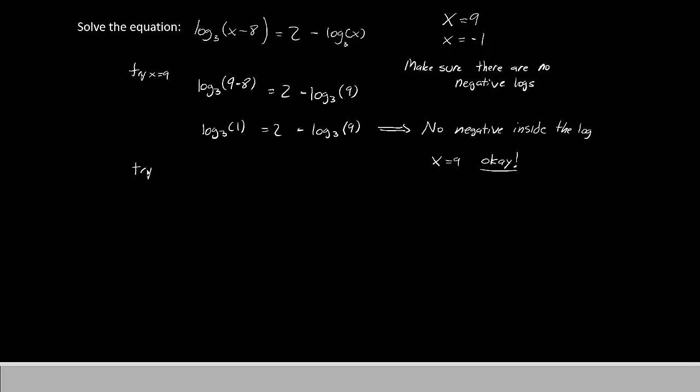Now let's try x equals negative 1. Let's put that into the top equation. We'll have log base 3 of negative 1 minus 8 equals 2 minus log of negative 1. We can already see that there is a negative number inside of the log. And if you take the log of a negative number, you will not get a real answer. Anytime you get a not real answer, the negative 1 is not a real solution.